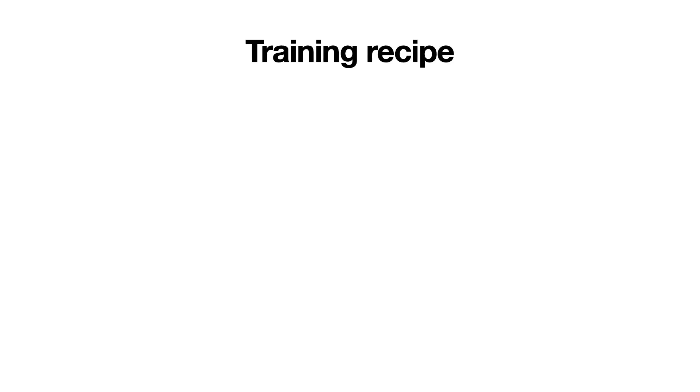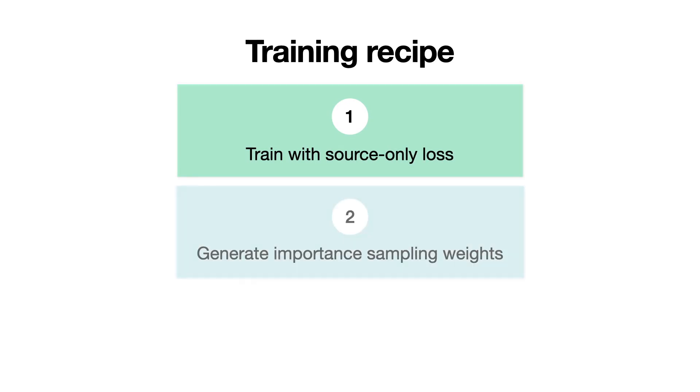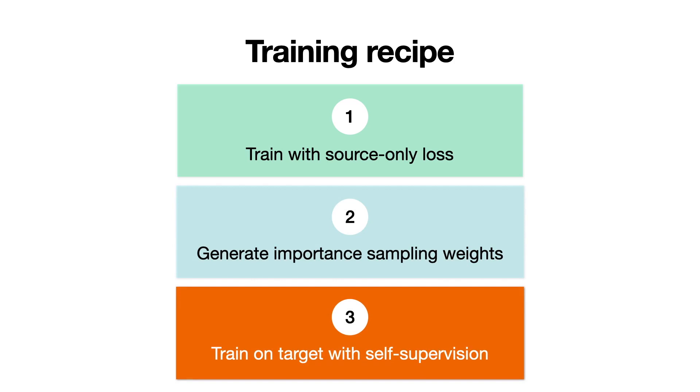We train our framework in three steps. First, we train only with the cross-entropy loss on source data. Second, we use this pre-trained model to generate the sampling distribution for importance sampling. Third, we jointly train on the source and target data with augmentation consistency.